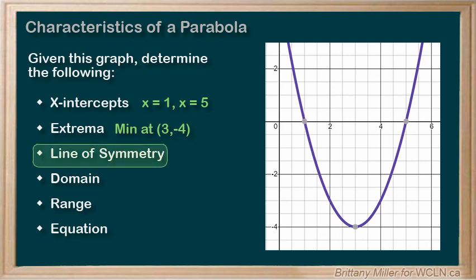The line of symmetry, which would cut the parabola into two equal halves, always occurs at the x value of the vertex. So the line of symmetry is x equals 3.